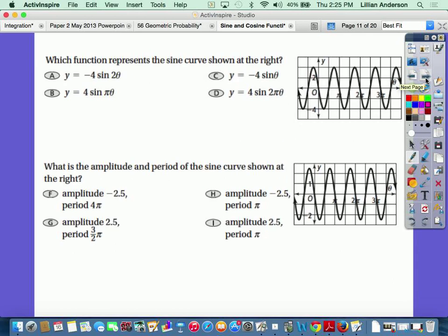The graphs. It says which function represents the sine curve shown at the right? Where do the sine start? Zero. And normal sine goes up. But this one went down. If it starts in zero, zero, it goes down. Which means that it's not going to be positive. It's going to be negative. So that meant that b and d were eliminated.